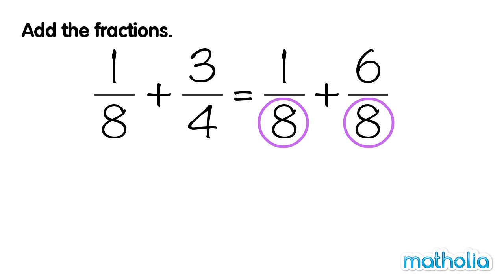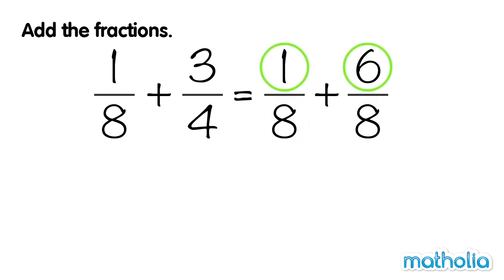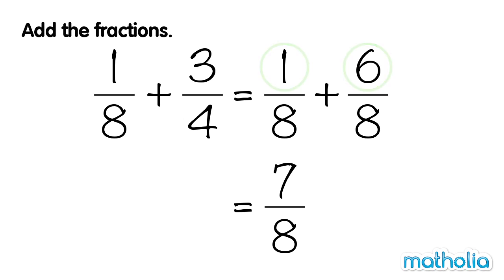The denominators are now the same. The fractions are like fractions. Let's add the numerators: 1 plus 6 equals 7. So 1 eighth plus 6 eighths equals 7 eighths. Therefore, 1 eighth plus 3 quarters equals 7 eighths.